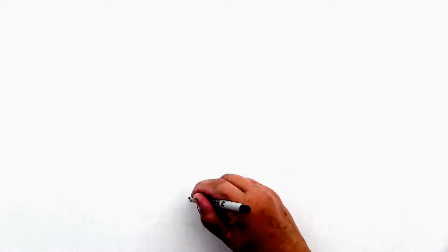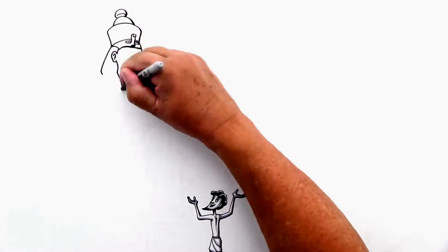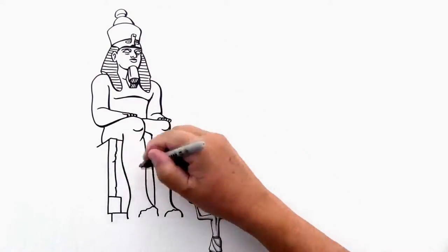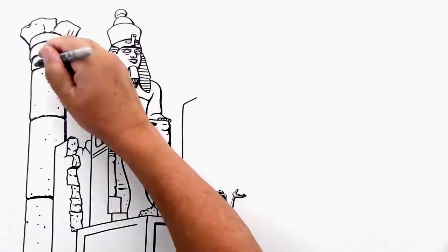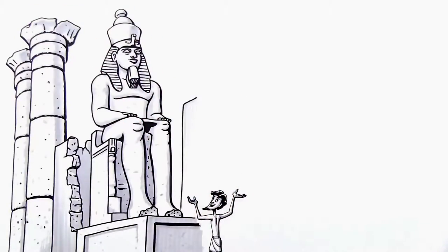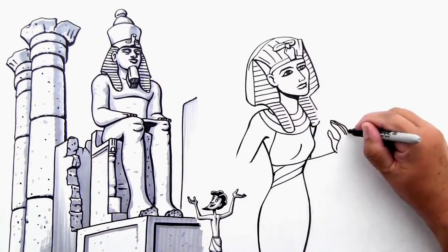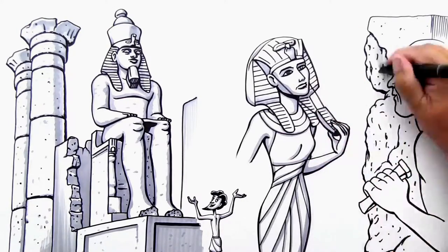Of course, the pharaohs themselves were considered the living gods. Pharaohs were portrayed according to specific rules that emphasized their perfect, unchanging nature. Usually these representations included some symbols of authority like the royal headdress, the crook, and the flail, and a false beard. Even the female pharaoh, Hatshepsut, commissioned statues of herself with the false beard to reinforce her position of authority.